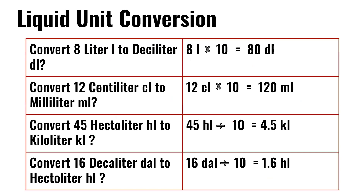Liquid unit conversion. Convert 8 liters to deciliters: 8 liters times 10 is 80 deciliters. Convert 12 centiliters to milliliters: 12 centiliters times 10 is 120 milliliters.